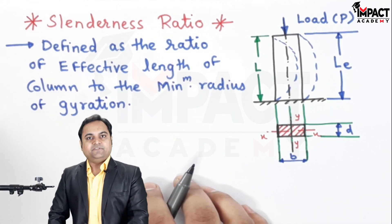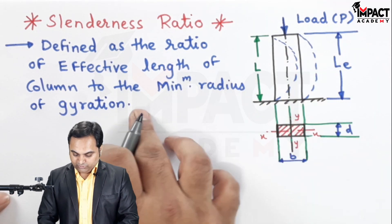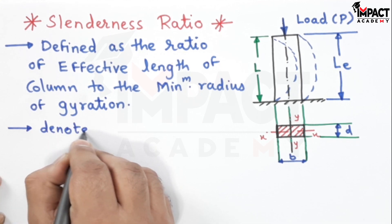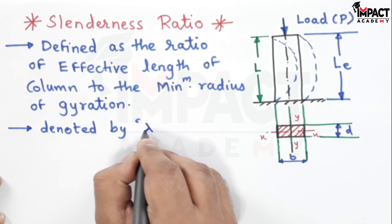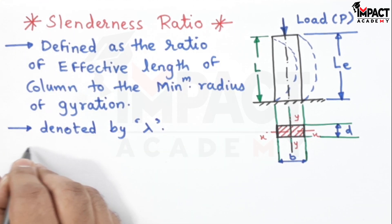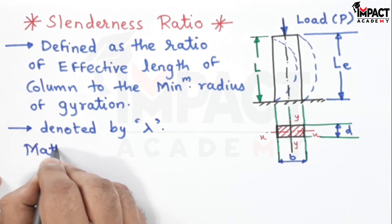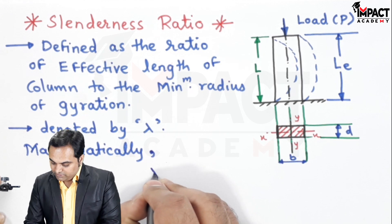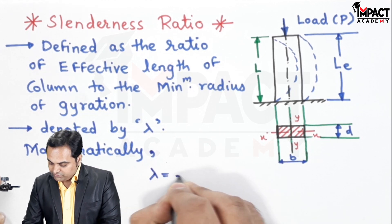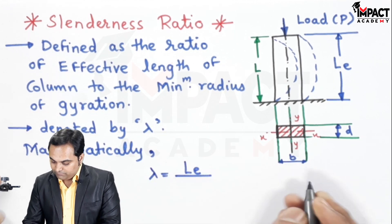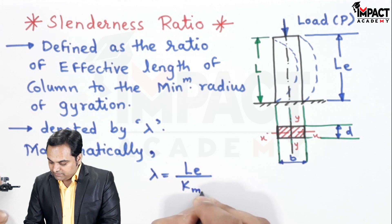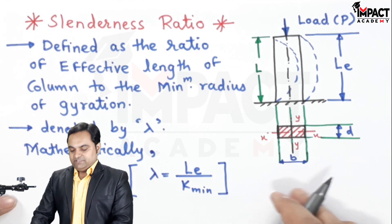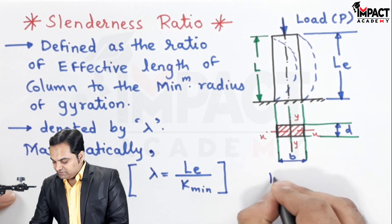It is defined as the ratio of the effective length of column to the minimum radius of gyration, denoted by lambda. The formula is given by: lambda or slenderness ratio is equal to the effective length of the column divided by K minimum, which is the minimum radius of gyration.